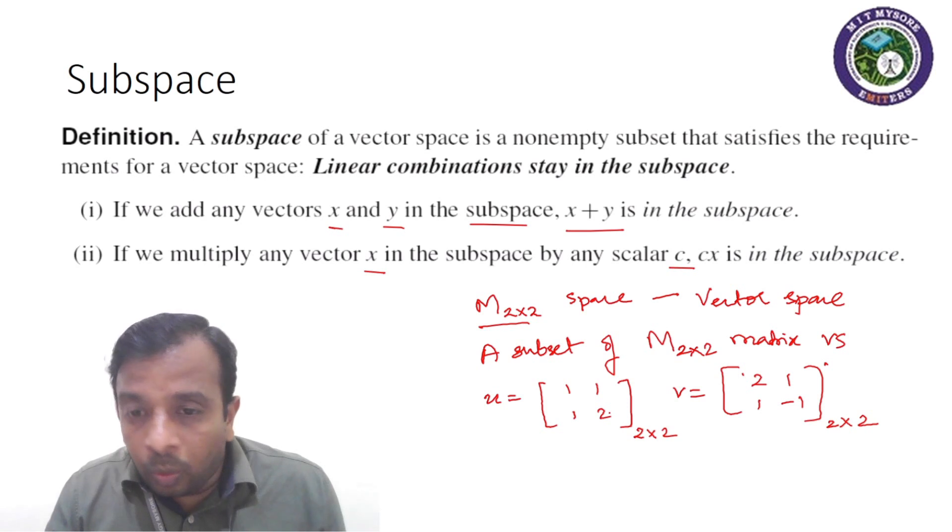That is, U and U transpose would make it the same. That is, if we change the column 1 elements into row 1 elements, then it would be 1, 1, and again 1, 2. So it would make it symmetric, or U is equal to U transpose. Similarly, V is equal to V transpose. That is, when we interchange the rows and columns, they remain the same. So V is equal to V transpose. So these two are subset or elements of M2 cross 2 vector space.